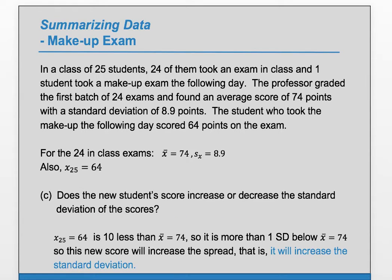So, since it's 10 less than the average and the SD is 8.9, this value is farther away from the average than on average the other values are. Because the SD is the kind of average distance from the average. So, this value of 64 is more than one SD from the average.